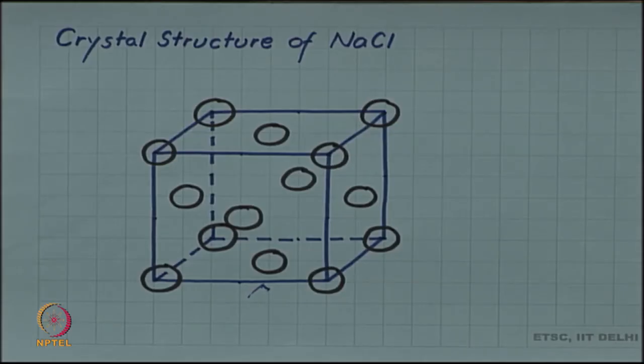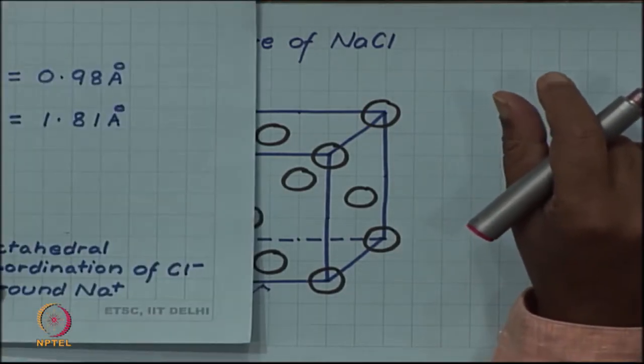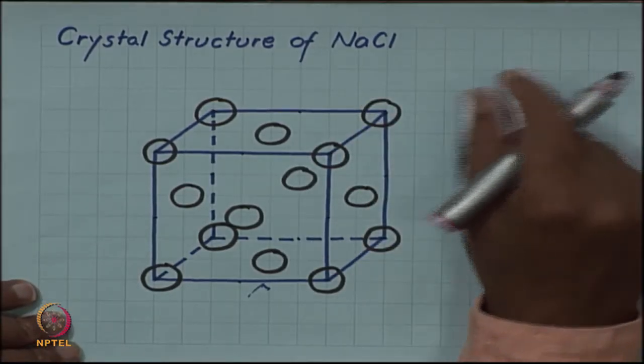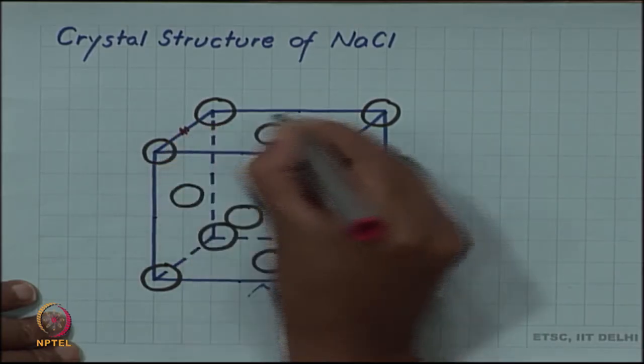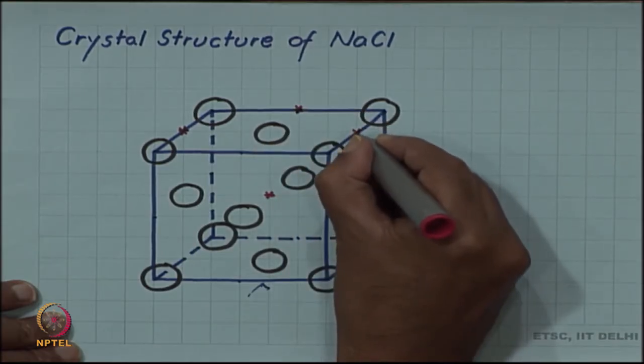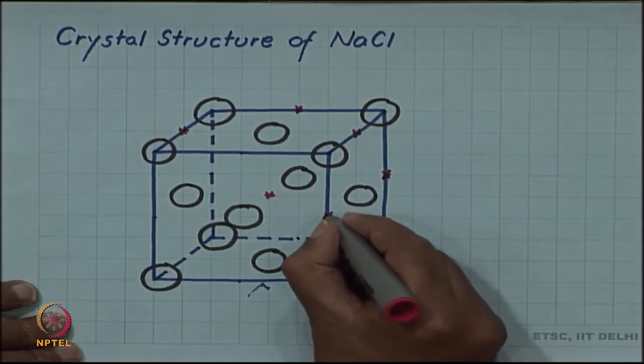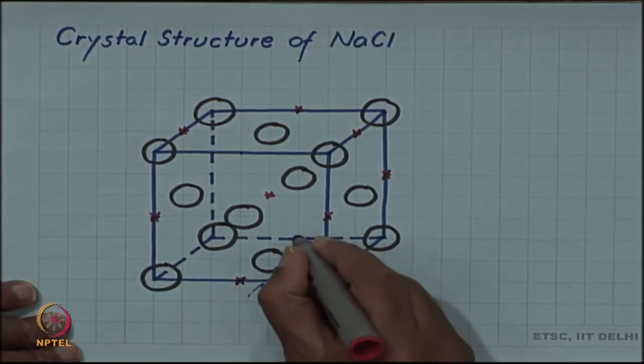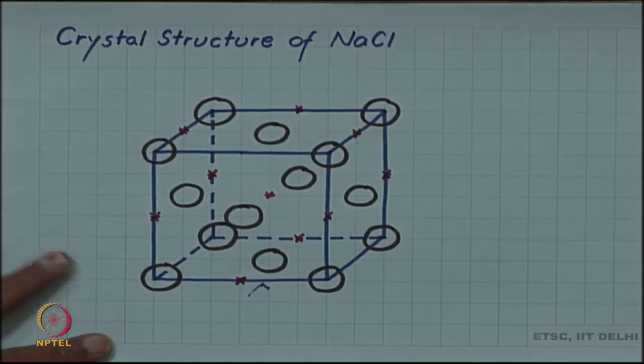The question is where are the sodium ions? Since sodium has an octahedral coordination, and the octahedral sites for face centered cubic are in the cube center as well as on the edge centers, these are the locations where the sodium ions can sit having an octahedral coordination - midpoints of all edges and the center of the cube.